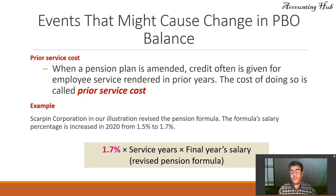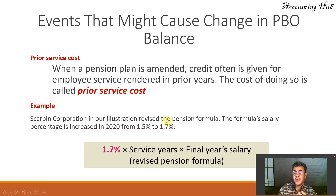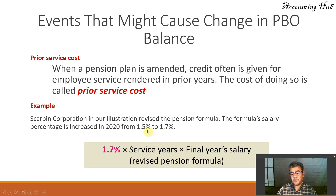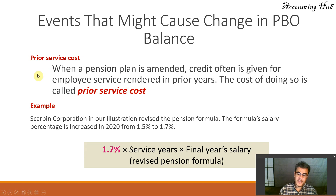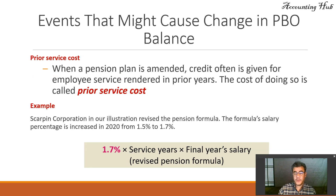Prior service cost arises when we have changes in our pension formula — for example, from 1.5% to 1.7%. How much does the service cost change because of this? Under US GAAP, this difference from the previous balance is a prior service cost recorded in accumulated other comprehensive income. Under IFRS, it is treated as a service cost.